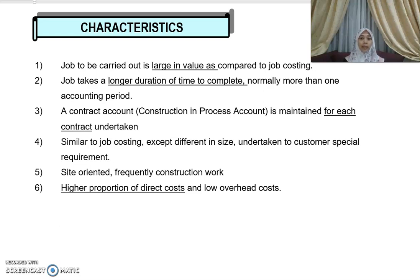For each contract, you maintain a contract account known as the construction-in-process account, or sometimes called the construction-in-progress account. Similar to job costing except different in size — the amount involved. Contract costing is also undertaken to customer special requirements. Another characteristic is that it is site-oriented, meaning it depends on the site where the construction work is undertaken. Normally, it has a higher proportion of direct costs and a low proportion of overhead costs. For example, in building construction, materials — which are a direct cost — make up a large portion of expenses.